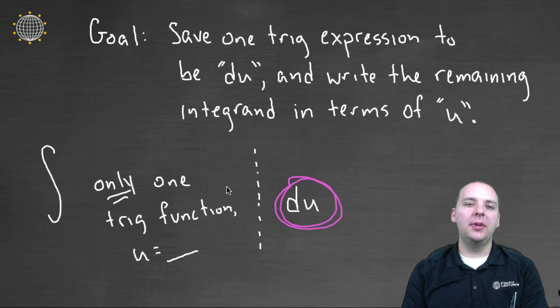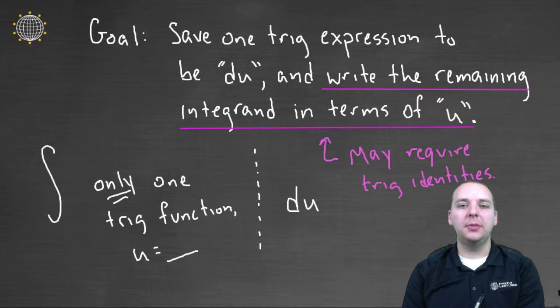Now you might say, well, how are you guaranteed that that's going to happen? Well, unfortunately you're not guaranteed that's going to happen. So what you might possibly have to do in rewriting the remaining integrands in terms of u for this front half, you might need trig identities.